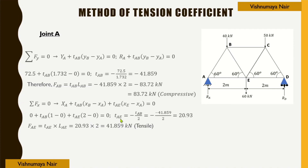TAE = −TAB/2 = 41.859/2 = 20.93. Therefore FAE = TAE·LAE = 20.93 × 2 = 41.859 kN, and it is tensile.